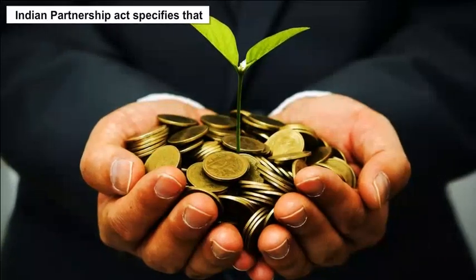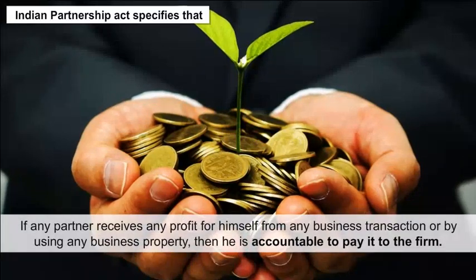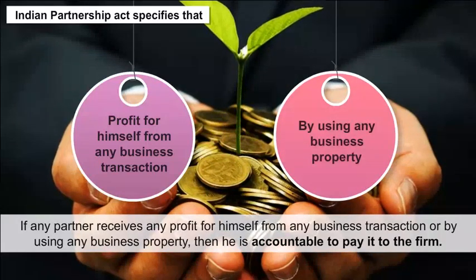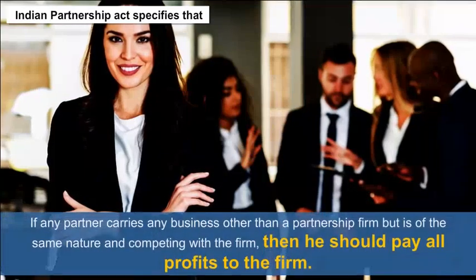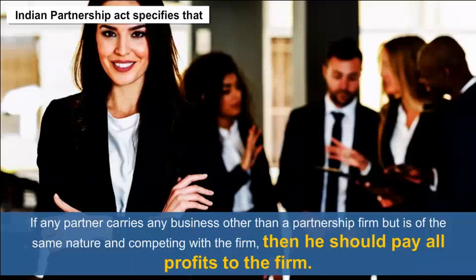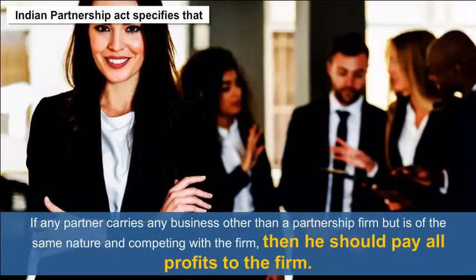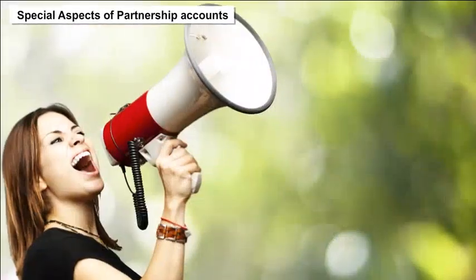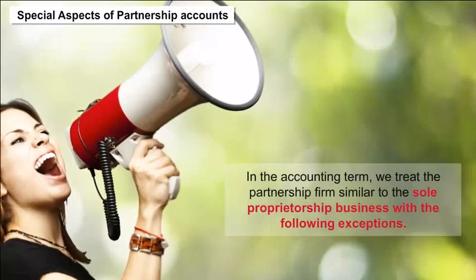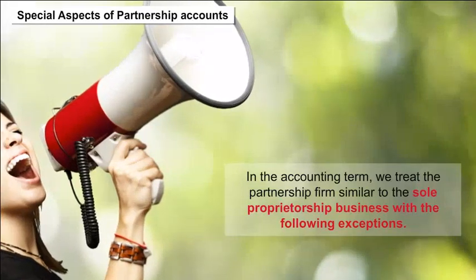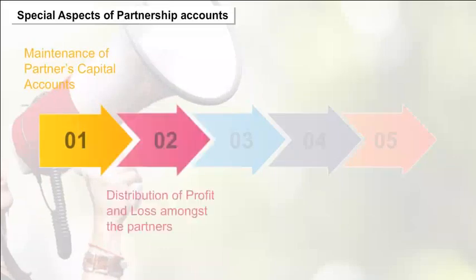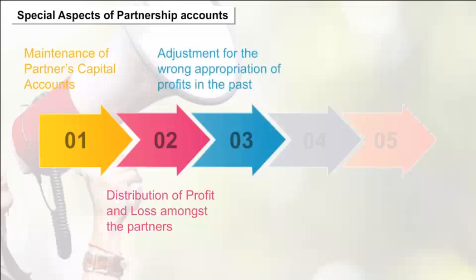The Indian Partnership Act specifies that if any partner receives any profit for himself from any business transaction or by using any business property, he is accountable to pay it to the firm. If any partner carries on any business other than the partnership firm but of the same nature and competing with the firm, he should pay all profits to the firm. Special aspects of partnership accounts: in accounting terms, we treat a partnership firm similar to a sole proprietorship business, with exceptions including maintenance of partners' capital accounts, distribution of profit and loss amongst partners, and adjustment for wrong appropriation of profits in the past.